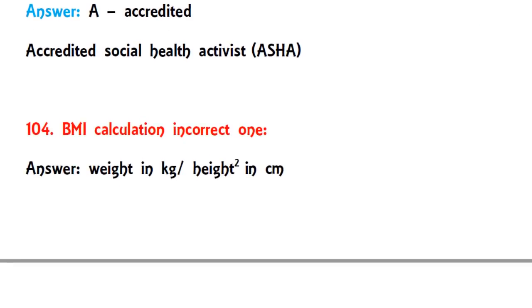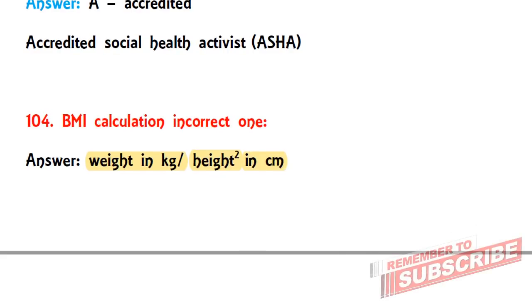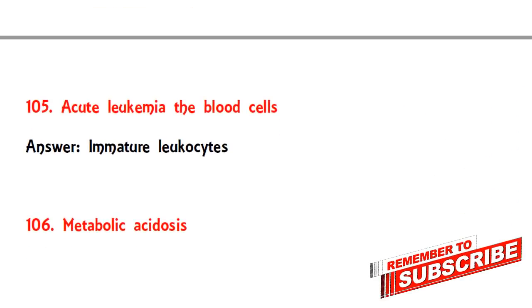Question 104 is related to BMI calculation. They asked for the incorrect formula. The correct BMI formula is weight in kg divided by height in meters squared, but they asked for the incorrect one in the examination — which is weight in kg divided by height squared in centimeters. That is the incorrect one we need to select.